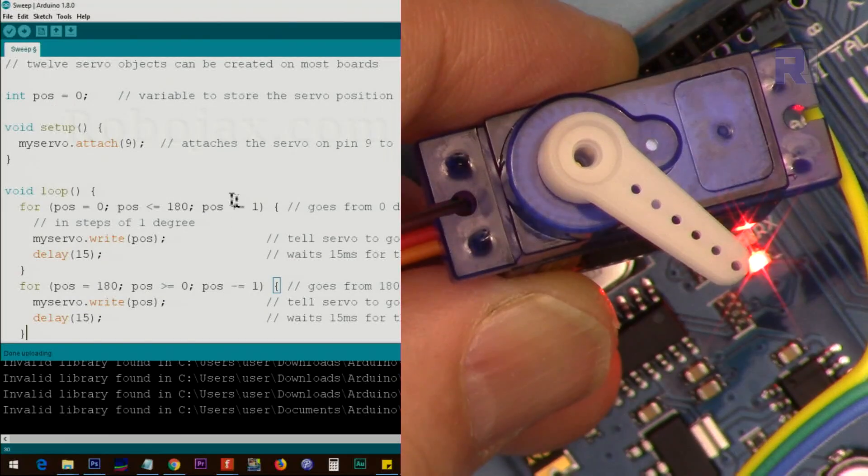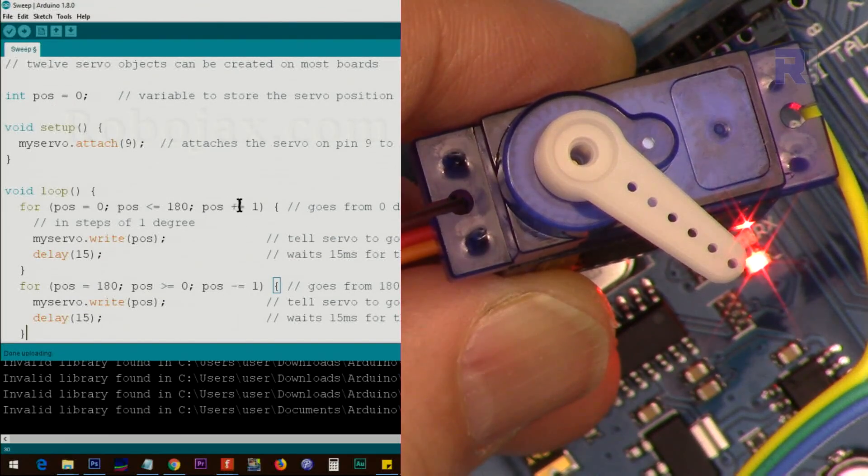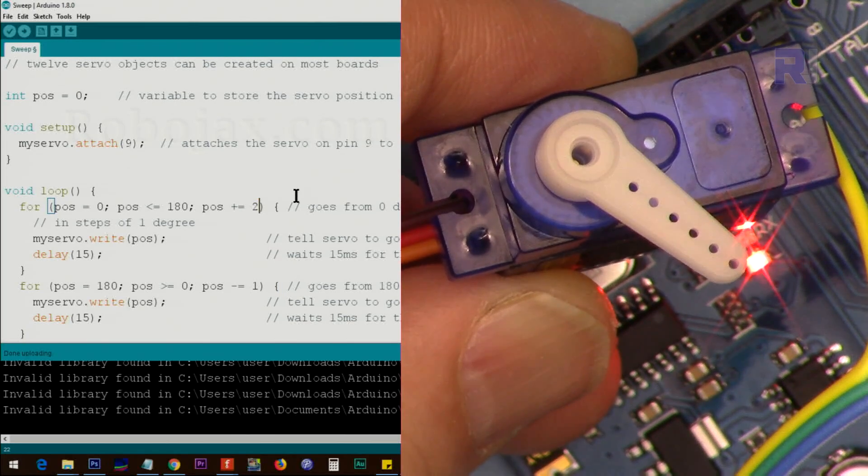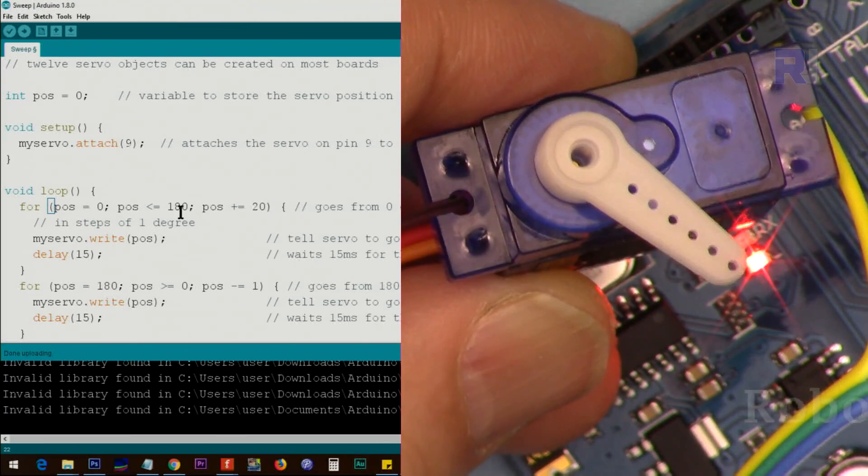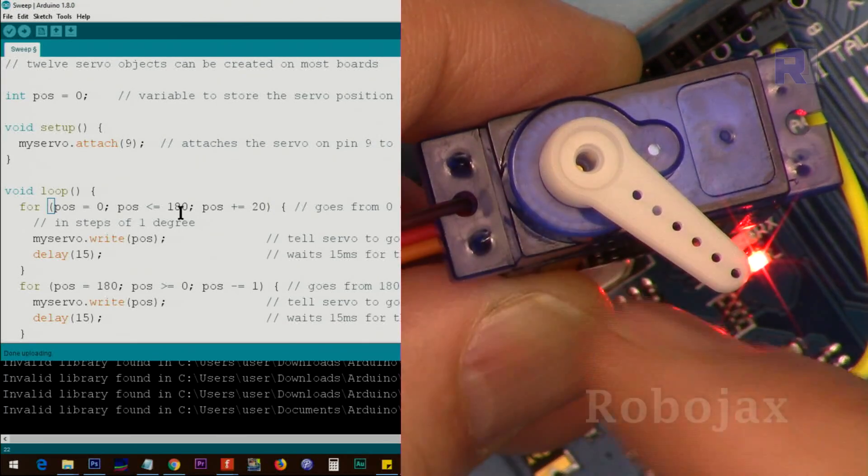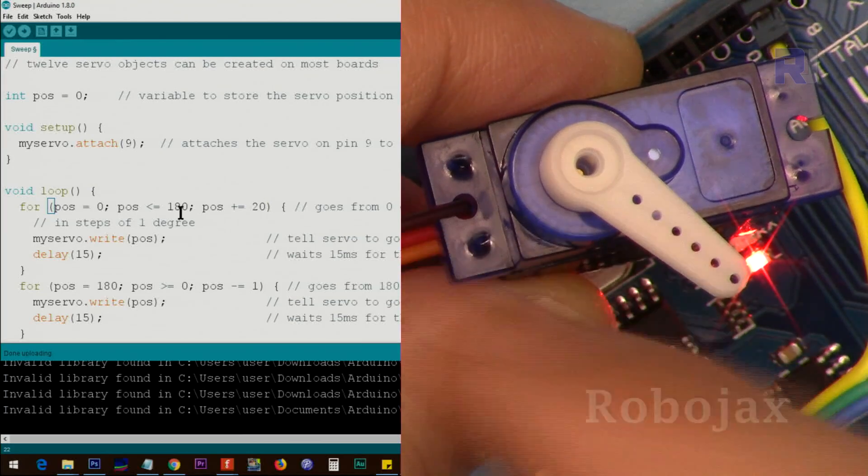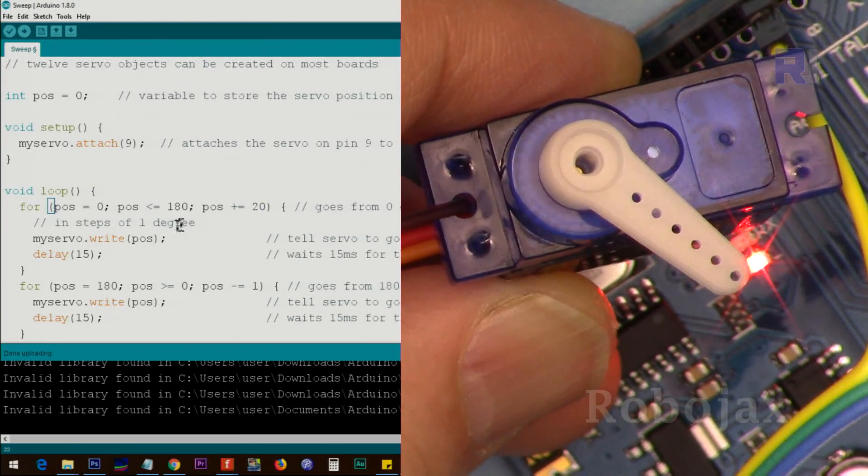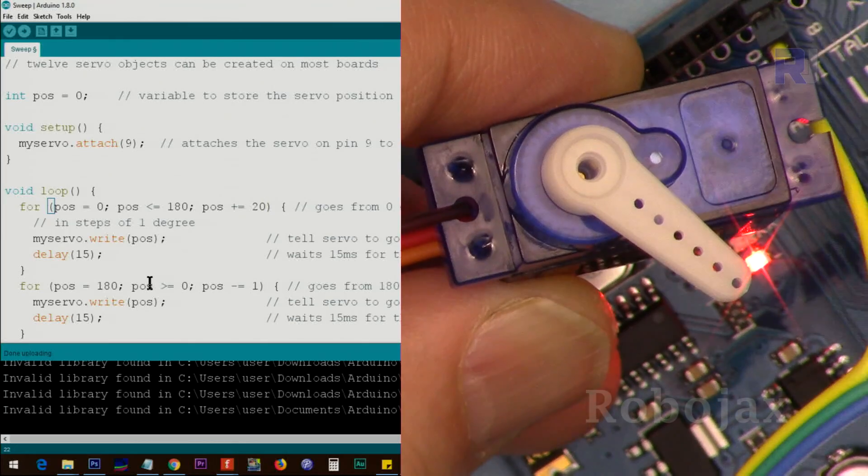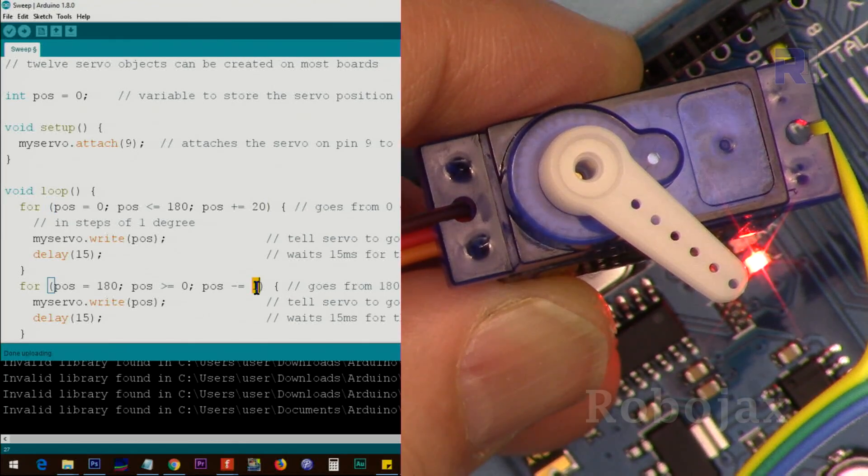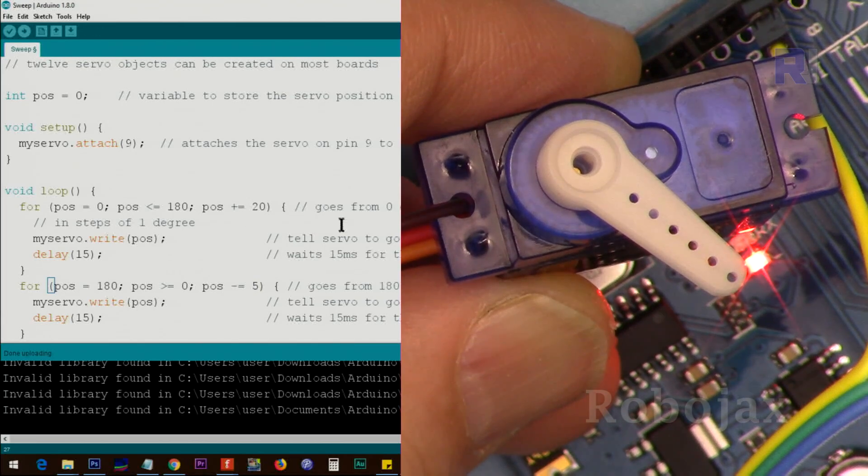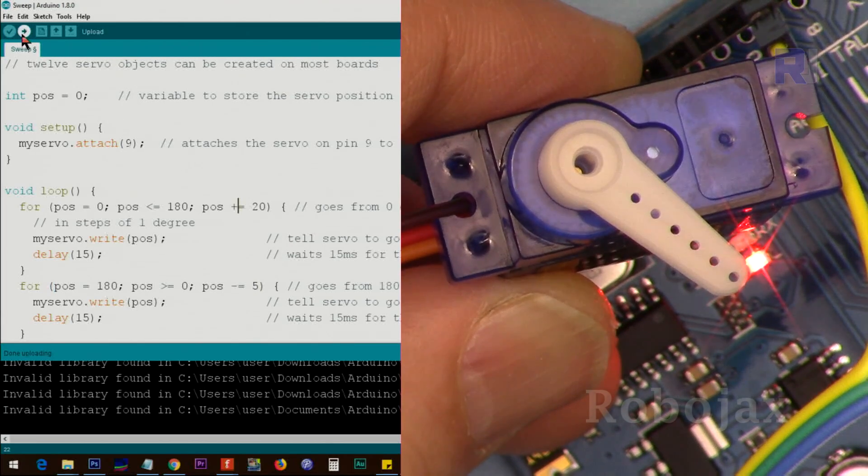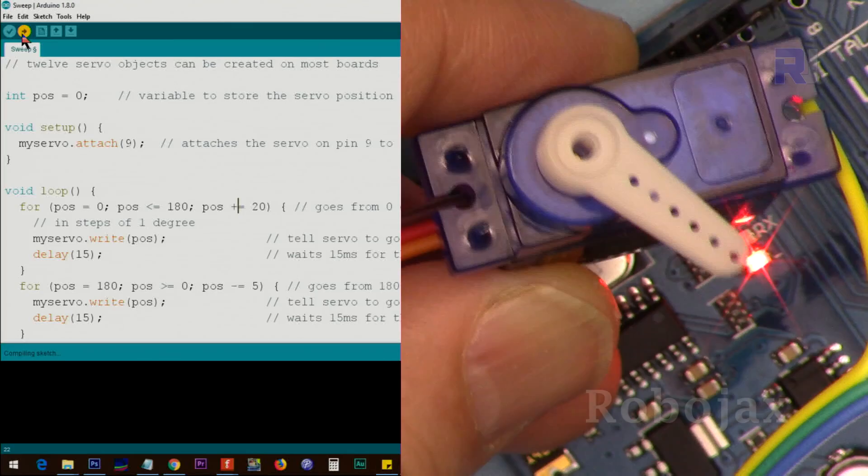Now I'm bringing back this code, and this time instead of one, let's move it 20 degrees clockwise from 0 to 180. That is 0 and 180, so we say go 20, 20, 20, and it will not reach 180, but when it goes back we say go 5 degrees because this is a step or increments. Let me upload it.